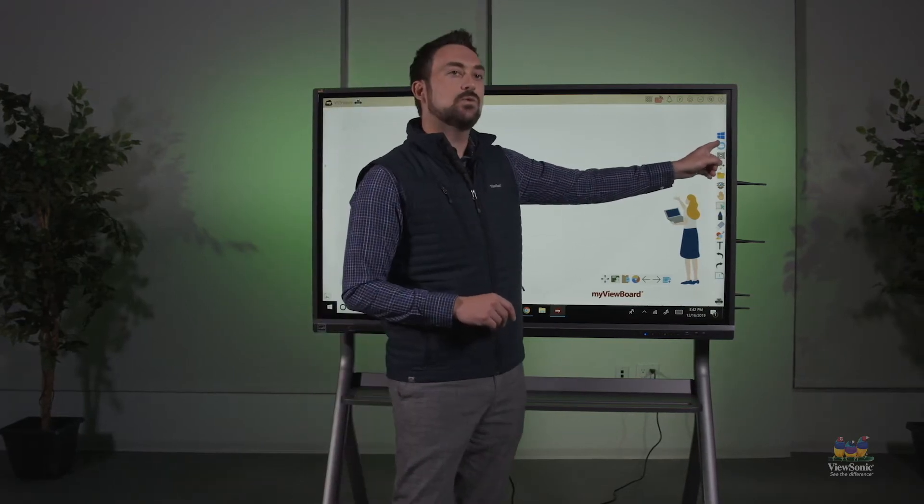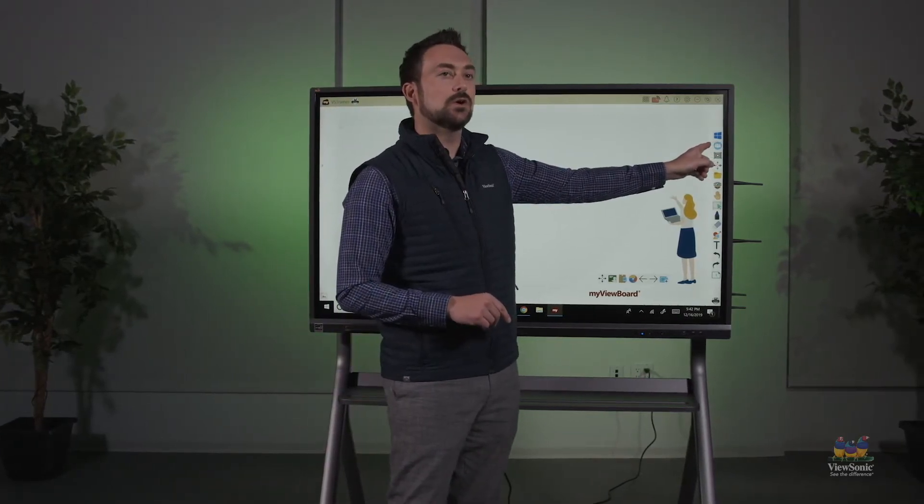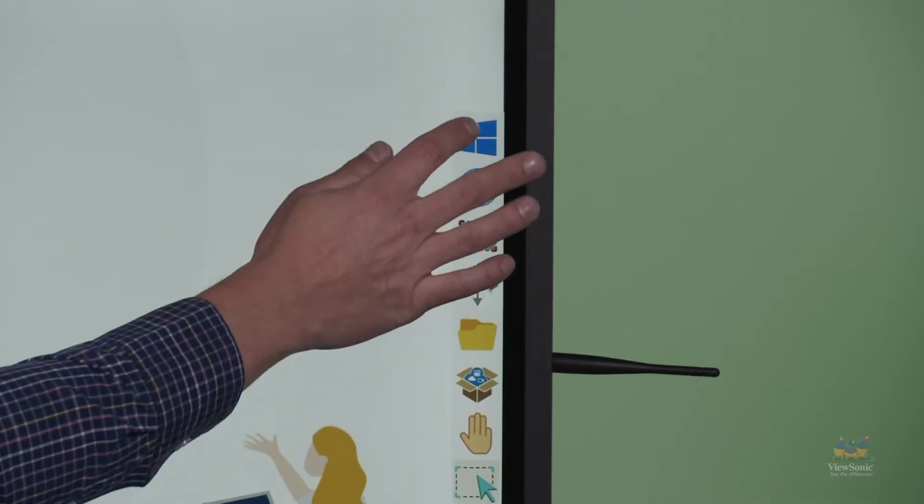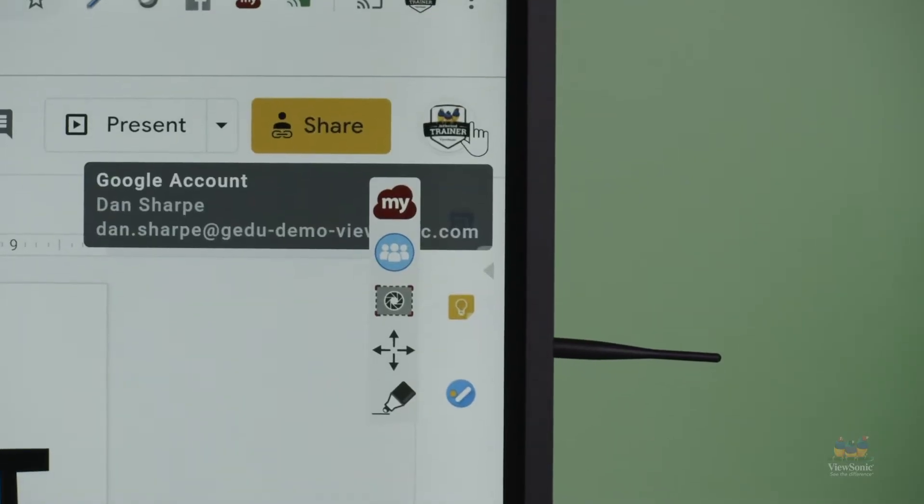You'll see up here in the main toolbar a little Windows logo. If we touch that, what's going to happen is it's going to hide the MyViewBoard canvas but still keep us in MyViewBoard.